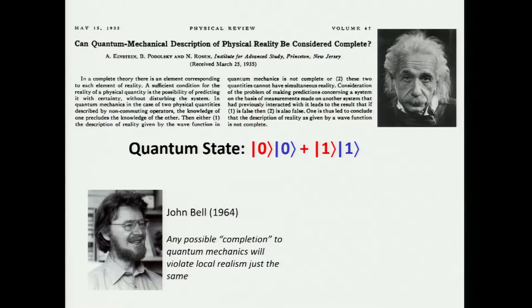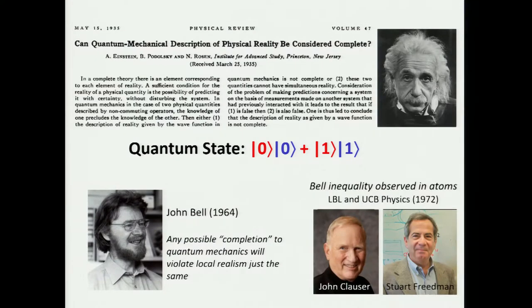There's a great Berkeley connection to measuring Bell's inequalities. The first measurements were done at LBL by John Clauser and Stuart Friedman back in 1972 involving cascaded atom spontaneous decays and correlations of them.